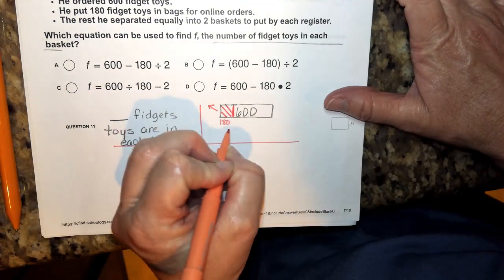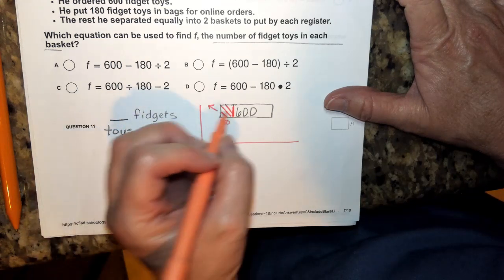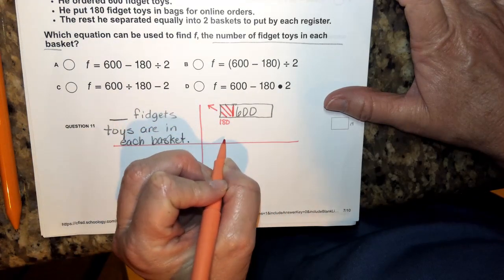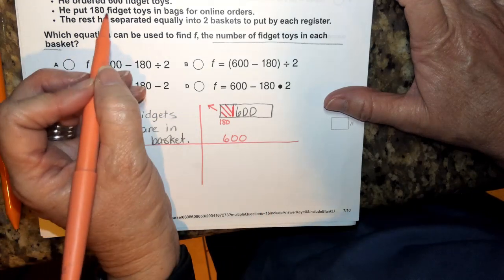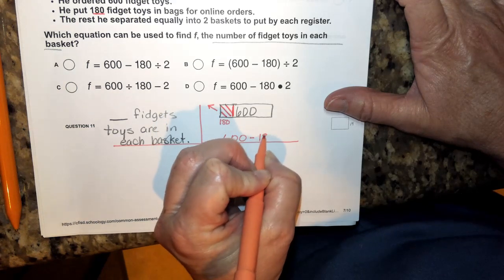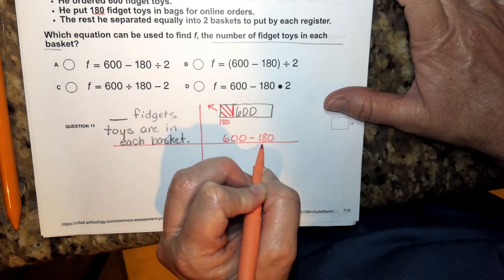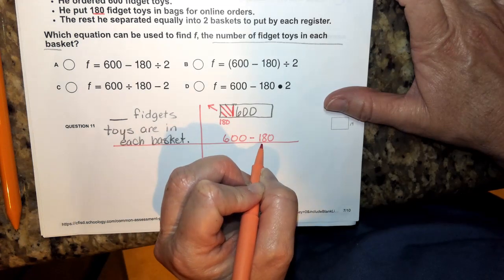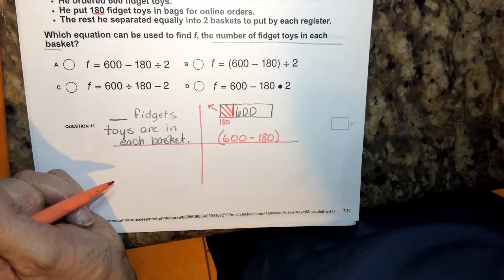That's right. You're going to probably be subtracting that. Okay. So I'm thinking to myself, you're going to start with 600 and you're taking these 180 away. That's going to need to happen first. So whether it happens first in when we start with it or whether we put it in parentheses.